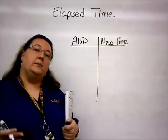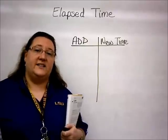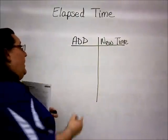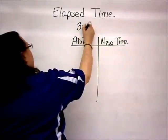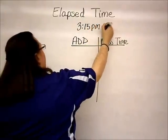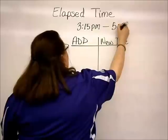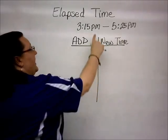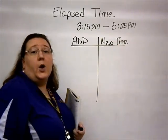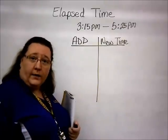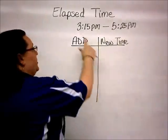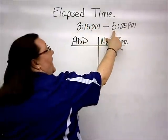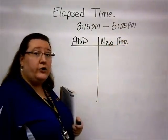We're going to take a look at some problems from the math workbook that go along with lesson 5.8. The first problem is number 1. It tells us that our start time is 3:15 p.m. and our end time is 5:25 p.m. The first thing we notice is that both times are p.m., which means we won't cross the 12 o'clock hour. That makes it a little easier. We start with 3:15 and add to it until we get to 5:25 p.m. by adding hours and minutes.